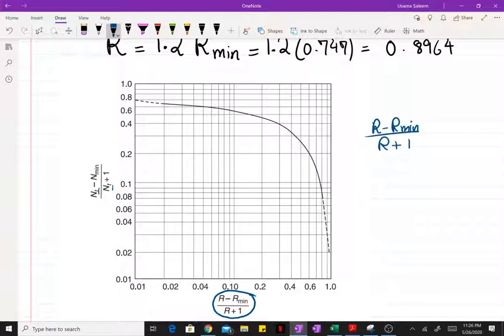Which turns out to be 0.8964 minus 0.747 over 0.8964 plus 1, which turns out to be, give me a second, 0.8...